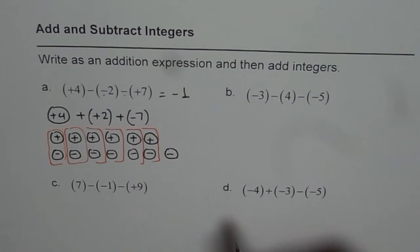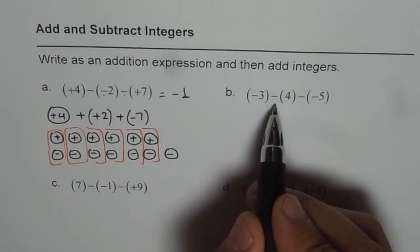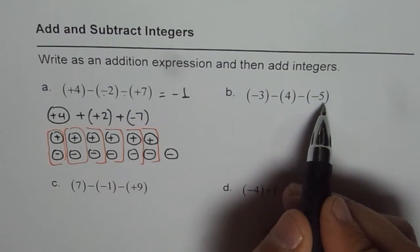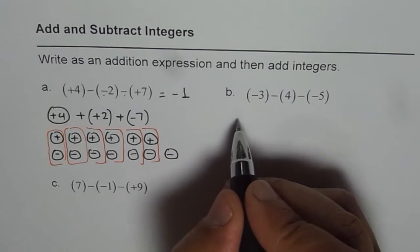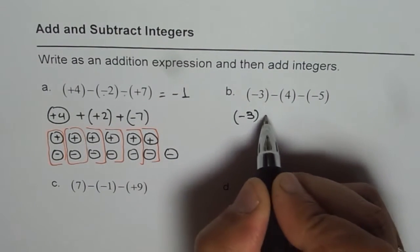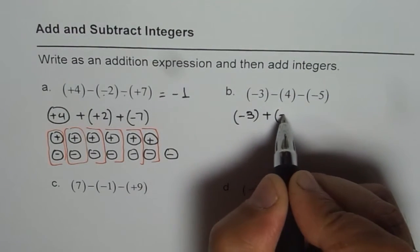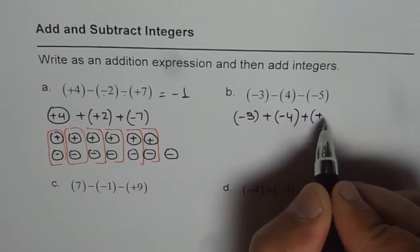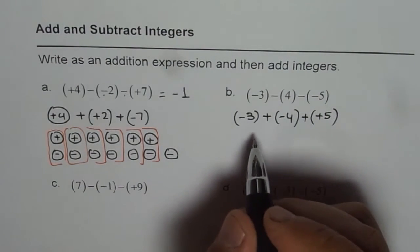Let us do the next question. Minus three minus of four. If nothing is given that means it is positive. And then we have minus of minus five. Let me write this as an addition statement. So it becomes minus three plus reverse the sign, it becomes minus four. Plus reverse the sign, it becomes plus five. Now let us make our counters.